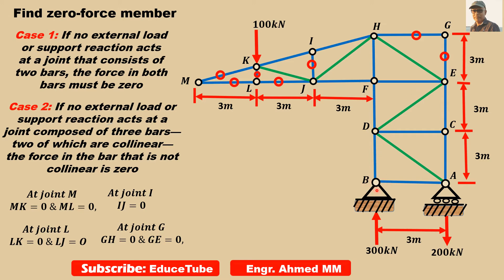Now let's move to B. At joint B, the 300 kilonewton force and BD are collinear. So this third one, BA, is not collinear, so it will be zero. As well, for the whole truss, there is no horizontal force, so BA must be zero.